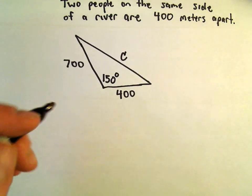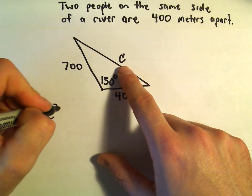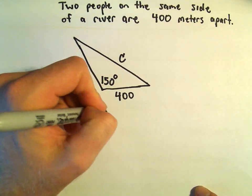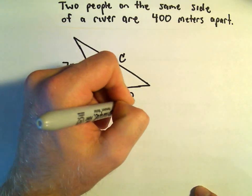Now we'll just use our law of cosines. So it says C squared equals 700 squared plus 400 squared minus 2 times 700 times 400 times cosine of the angle.